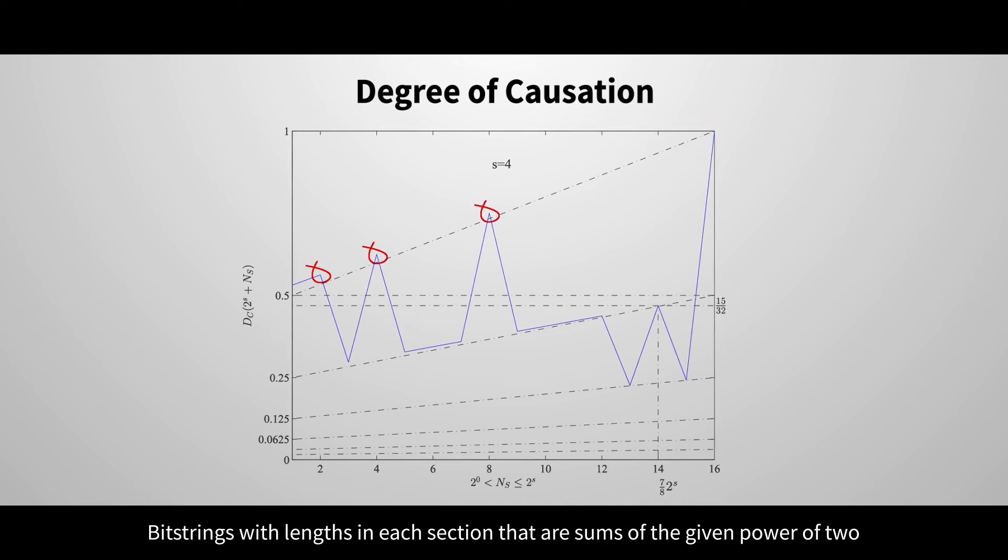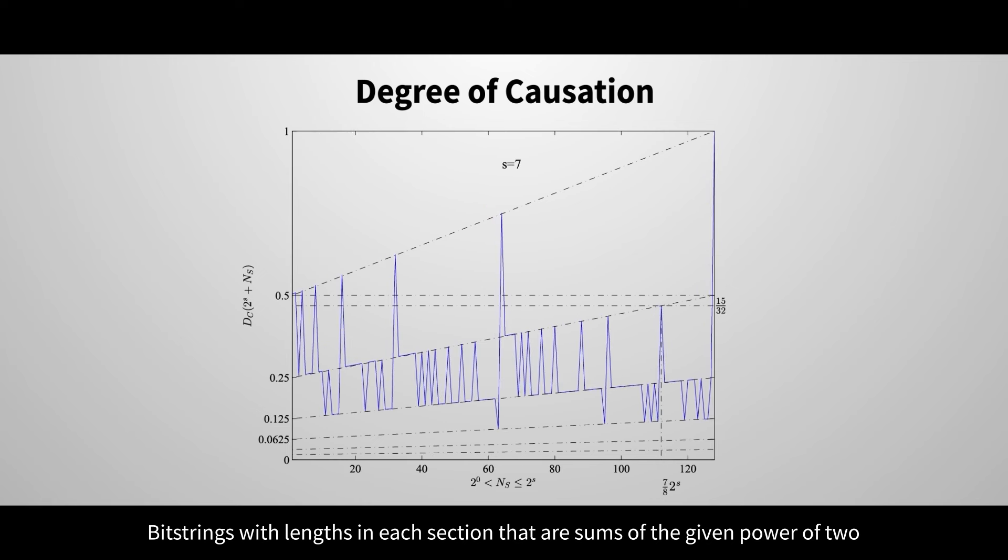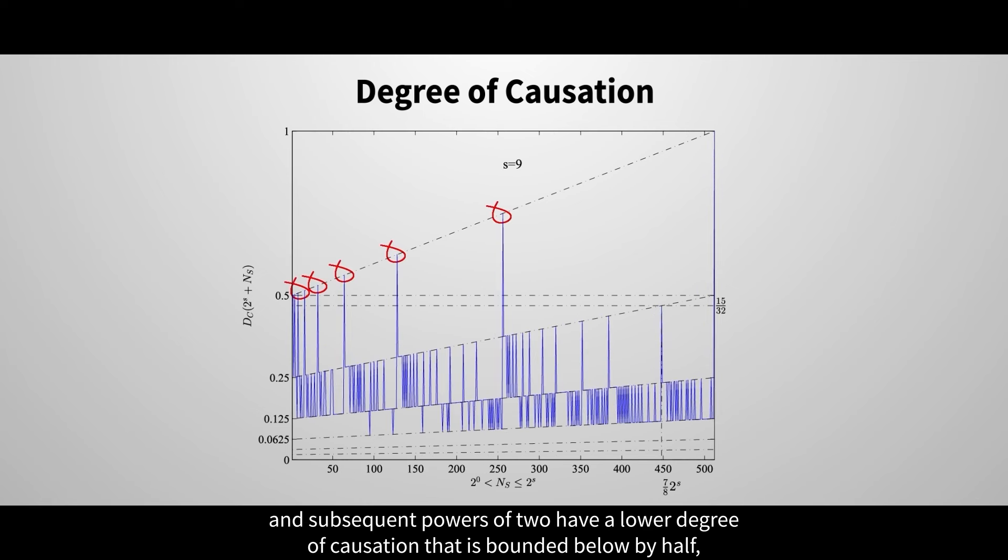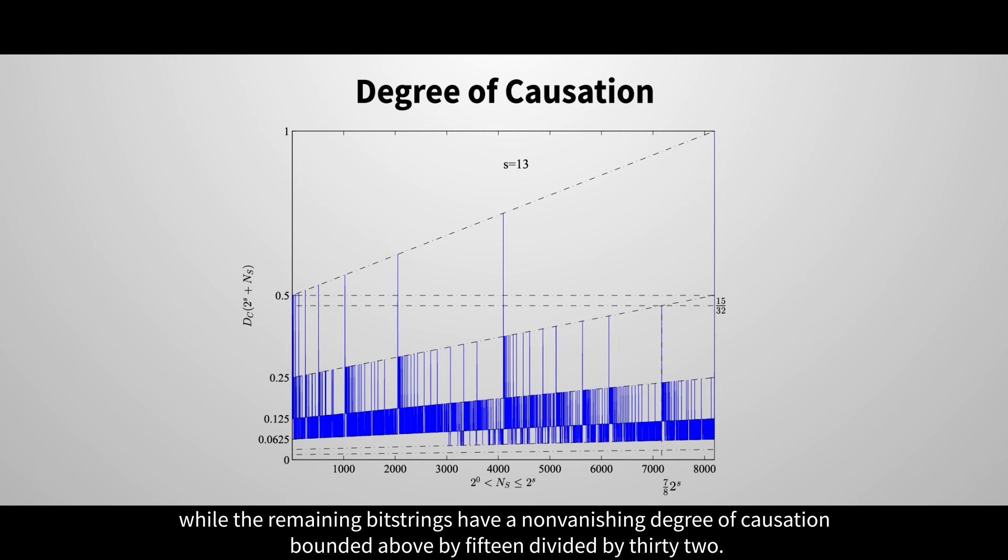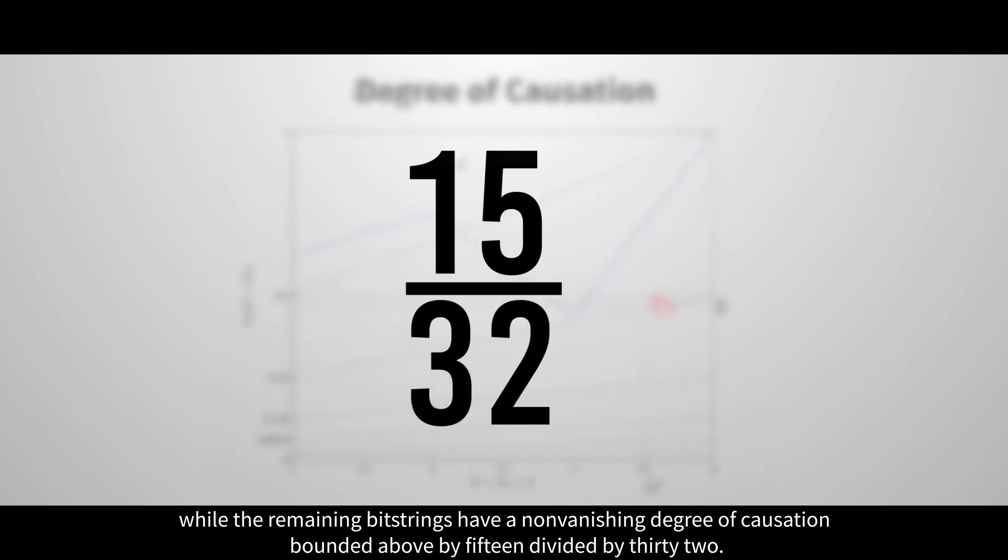Bitstrings with lengths in each section that are sums of the given power of 2 and subsequent powers of 2 have a lower degree of causation that is bounded below by half, while the remaining bitstrings have a non-vanishing degree of causation bounded above by 15 divided by 32.